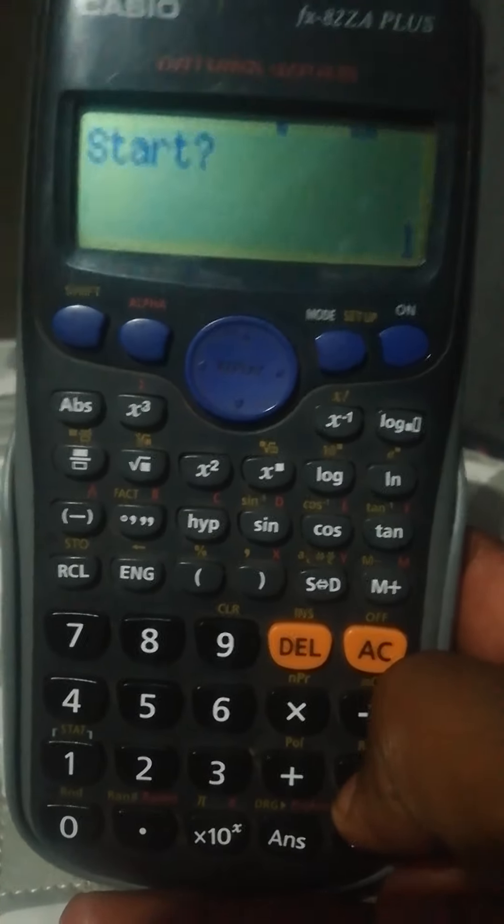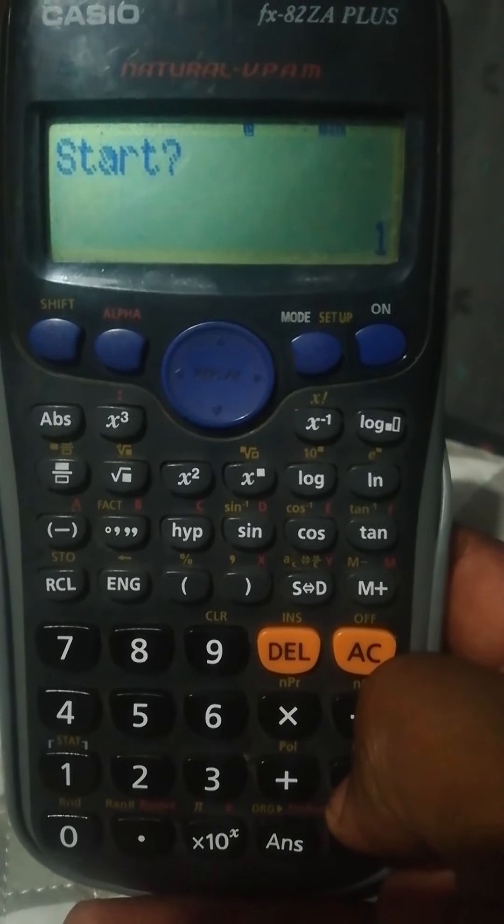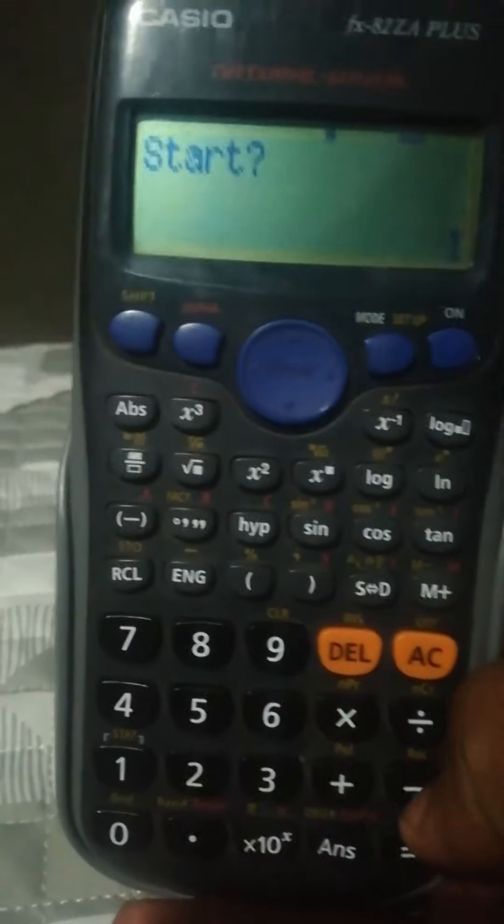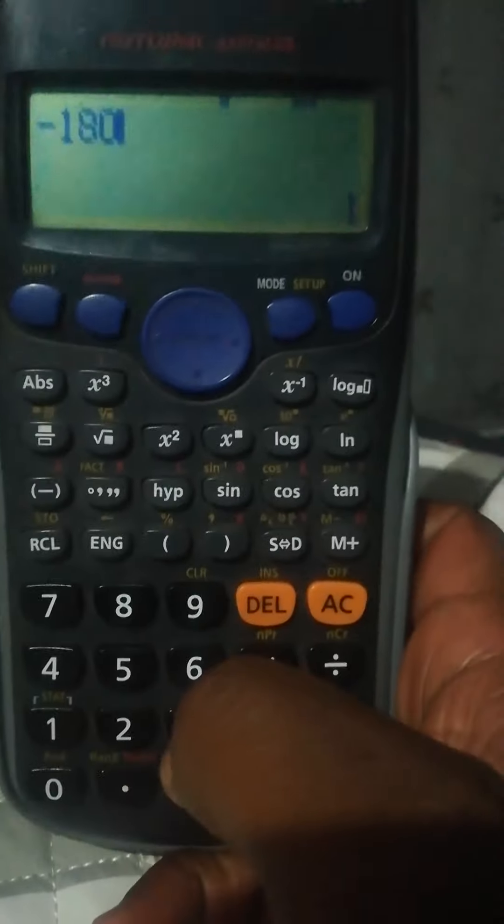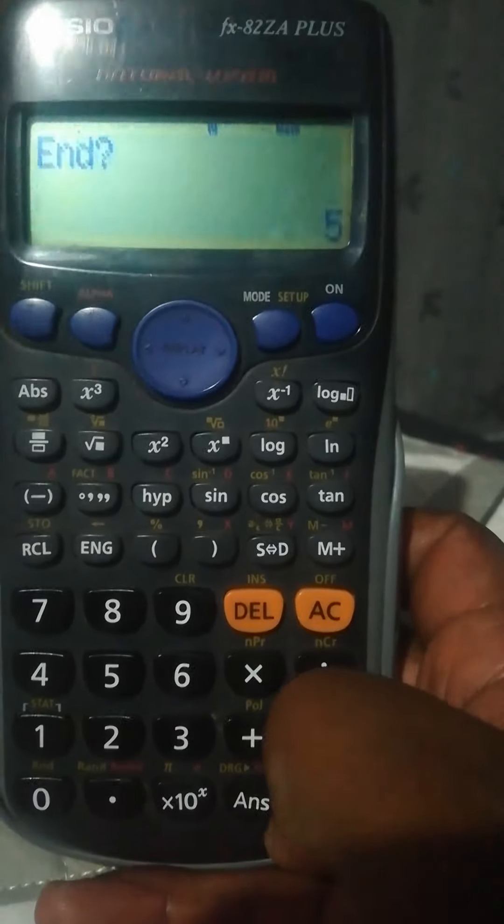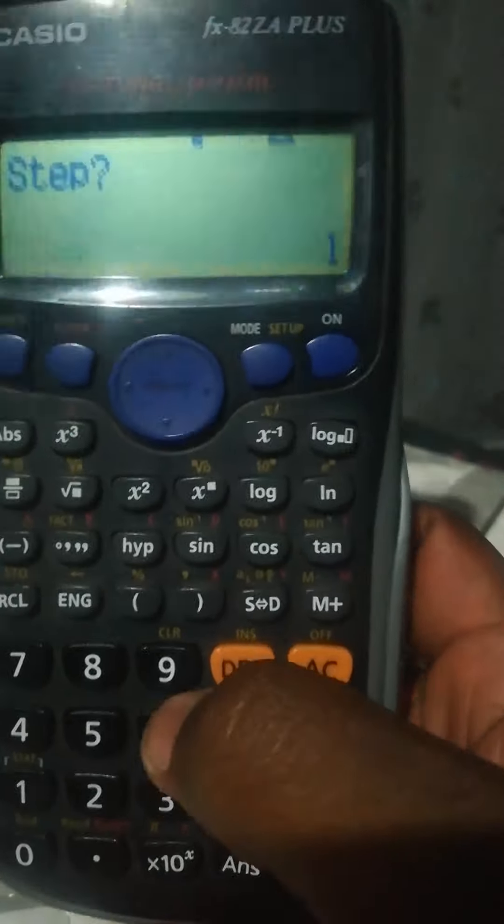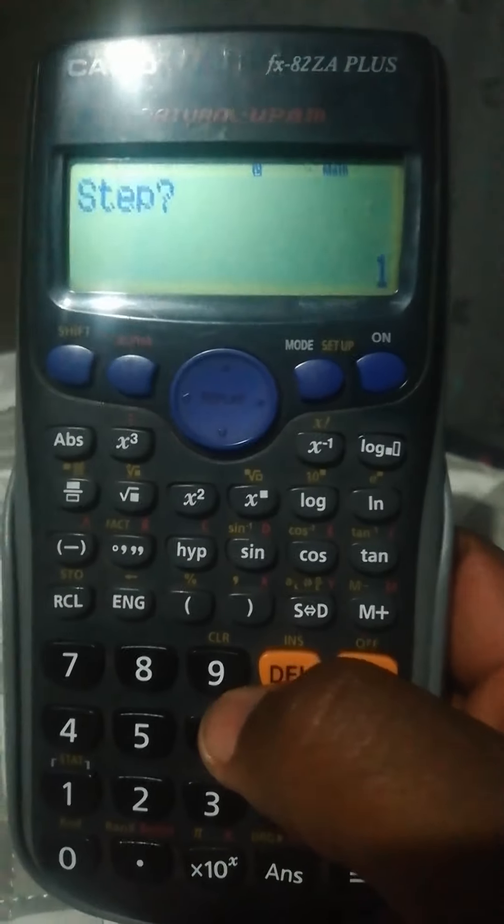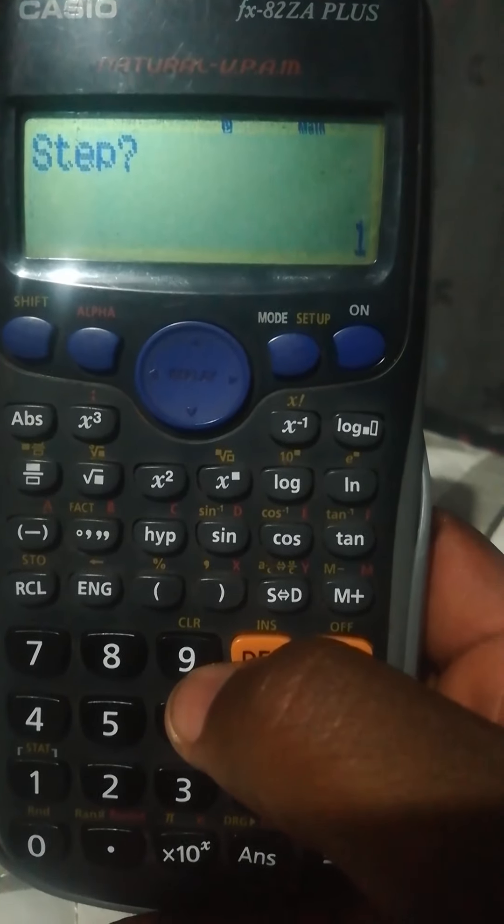And then the start and end, you select according to your domain. So they sketch for x element of -180 degrees to 180 degrees, so you start from -180 to 180, right.